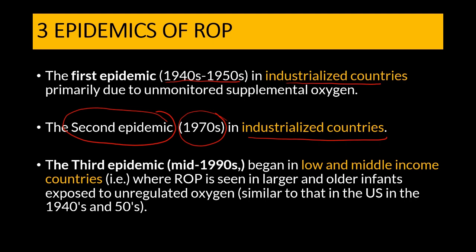The third epidemic happened in 1990 and began in low and middle income countries. As these countries caught up with advances in medical and neonatal care, varying levels of neonatal oxygen use led to ROP appearing as a third epidemic. Notably, ROP in these countries was also seen in larger babies and older infants exposed to unregulated oxygen, similar to what was seen in the US during the first epidemic.